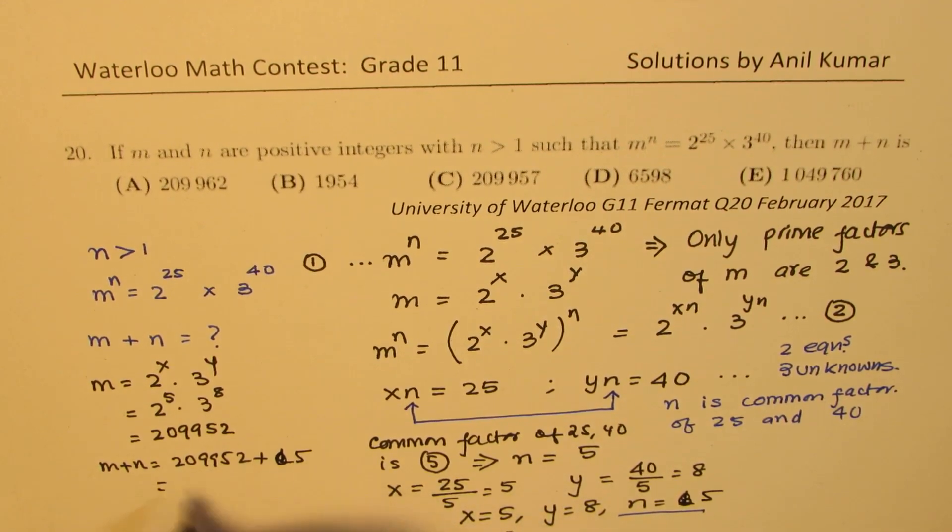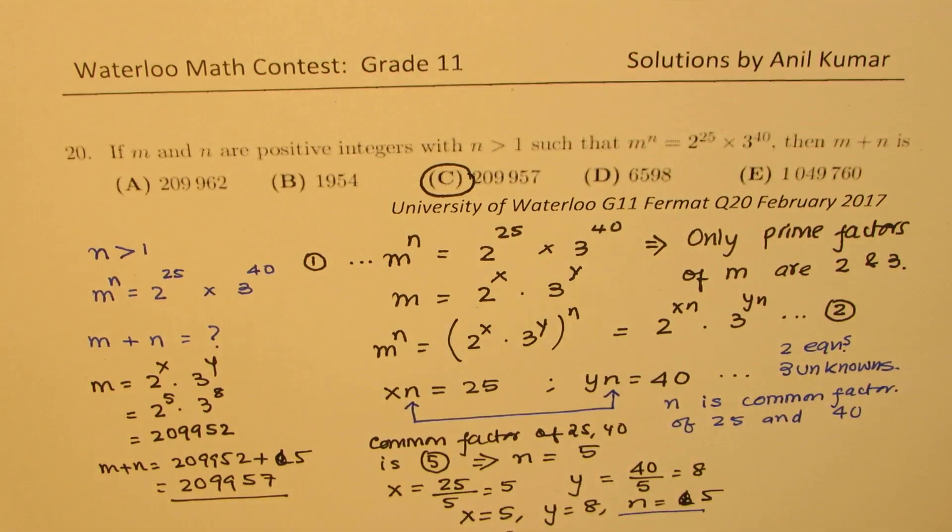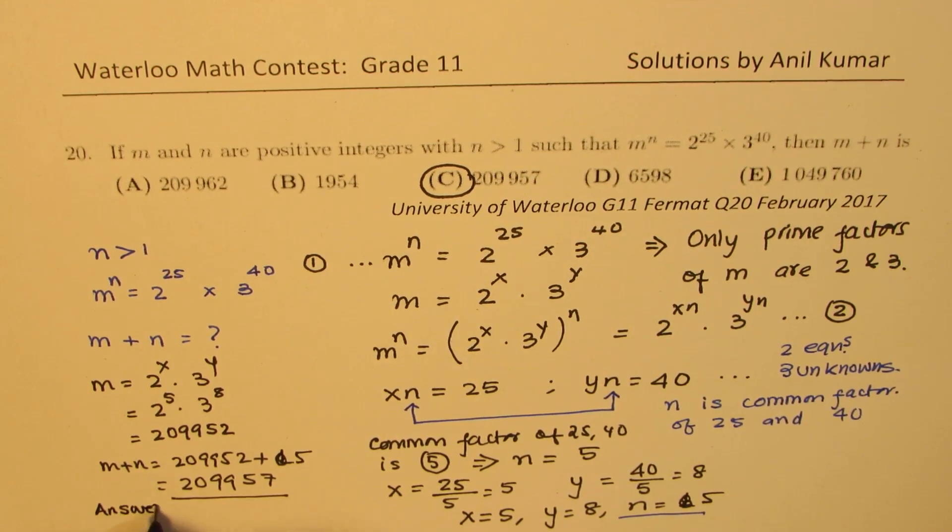So we'll add this and get our answer, which is 209957. 209957 is option C. So that becomes the solution. So we have that as our answer. So answer is option C.